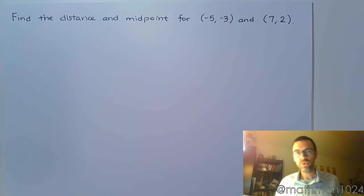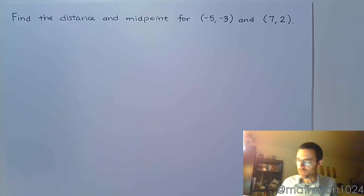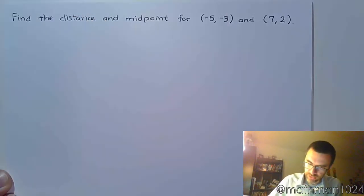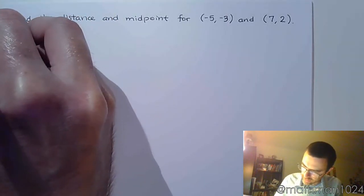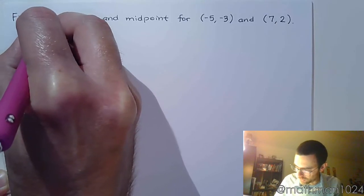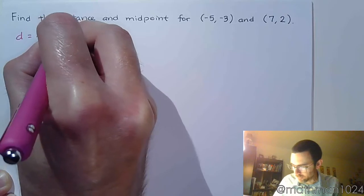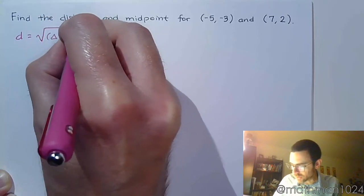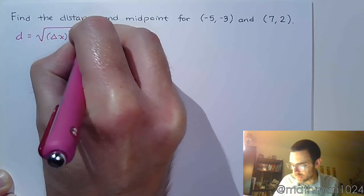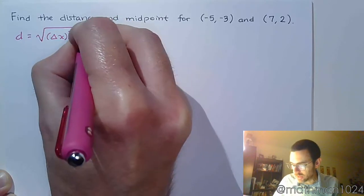We have two ordered pairs here, and we are tasked with finding the distance and the midpoint between the two. Let's start with the distance. The formula for the distance is the square root of the change in x squared plus the change in y squared.